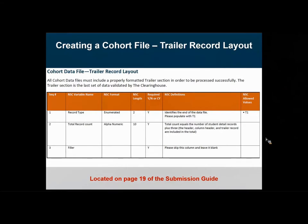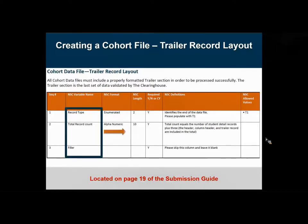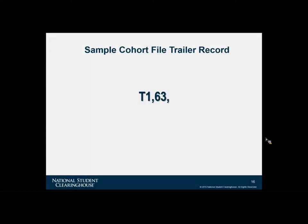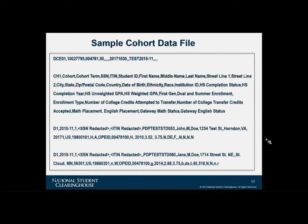The trailer record identifies where your data ends. Similar to the header, these are variable names and not column headers. You always populate a static T1 for the record type. You then count every row that is populated in your file, including the various headers and the trailer. So if I were to look at this in Excel, I would literally have 63 rows of data, and that's what I'm counting in my trailer. The next slide shows what that looks like — we have a file header, followed by column headers, followed by two student records, and closing with a trailer. In this case we have five rows of data.